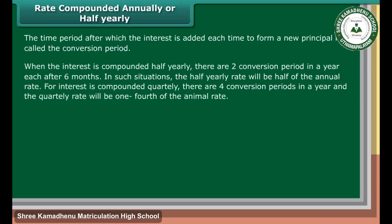Rate compounded annually or half yearly: The time period after which the interest is added each time to form a new principal is called the conversion period. When the interest is compounded half yearly, there are 2 conversion periods in a year, each after 6 months. In such situations, the half yearly rate will be half of the annual rate. For interest compounded quarterly, there are 4 conversion periods in a year and the quarterly rate will be one fourth of the annual rate.